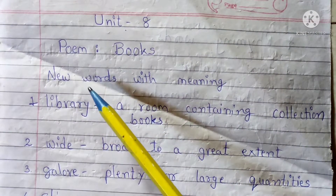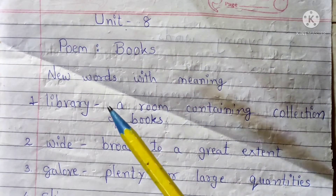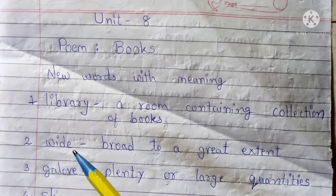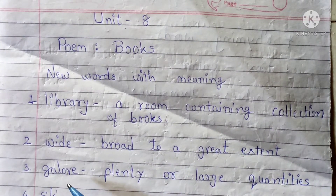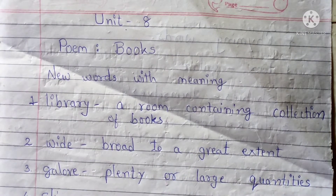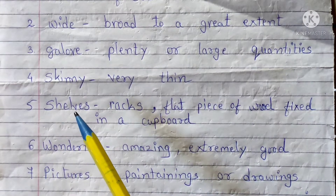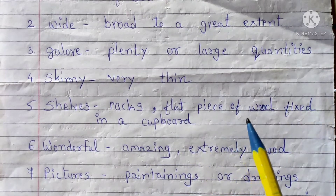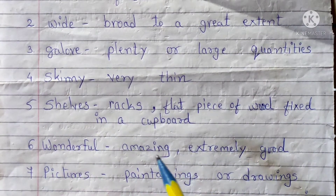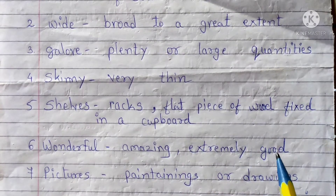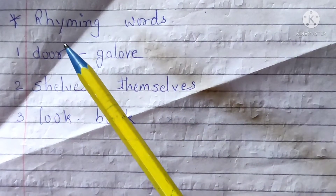Now let's see new words with meaning. Number 1: Library — a room containing a collection of books. Number 2: Wide — broad, to a great extent. Number 3: Galore — plenty, or large quantities. Number 4: Skinny — very thin. Number 5: Shelves — racks or flat pieces of wood fixed in a cupboard. Number 6: Wonderful — amazing or extremely good. Number 7: Pictures — paintings or drawings.